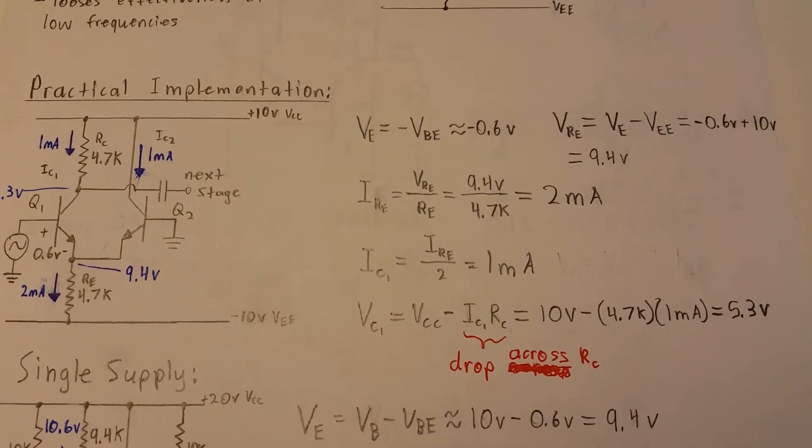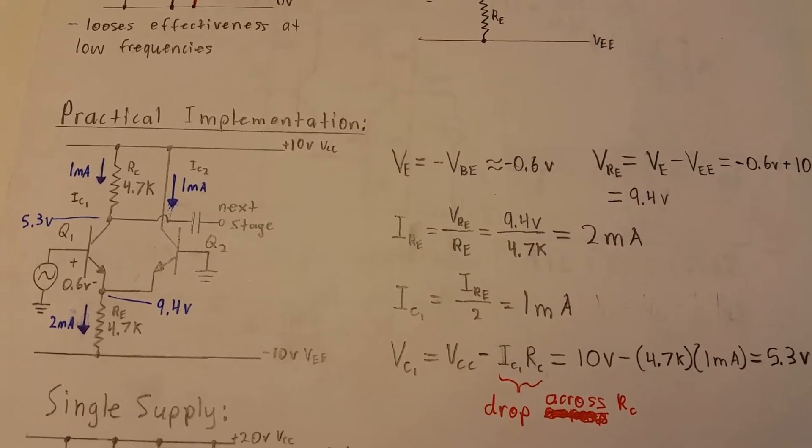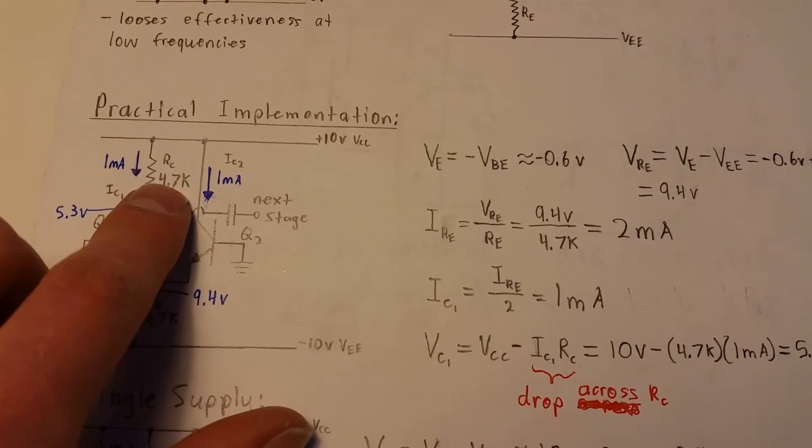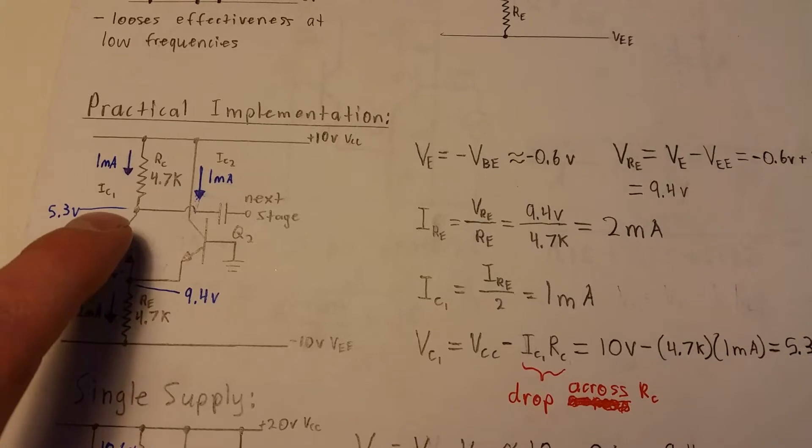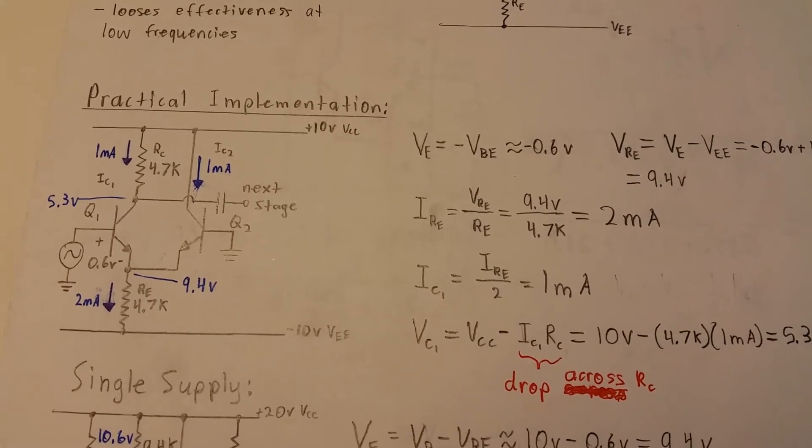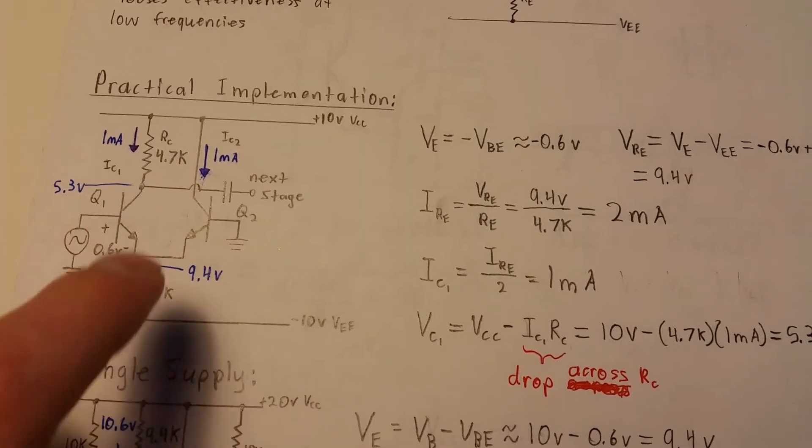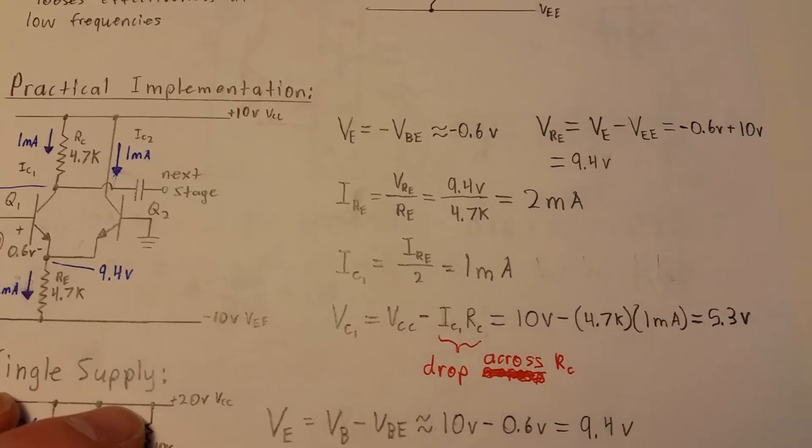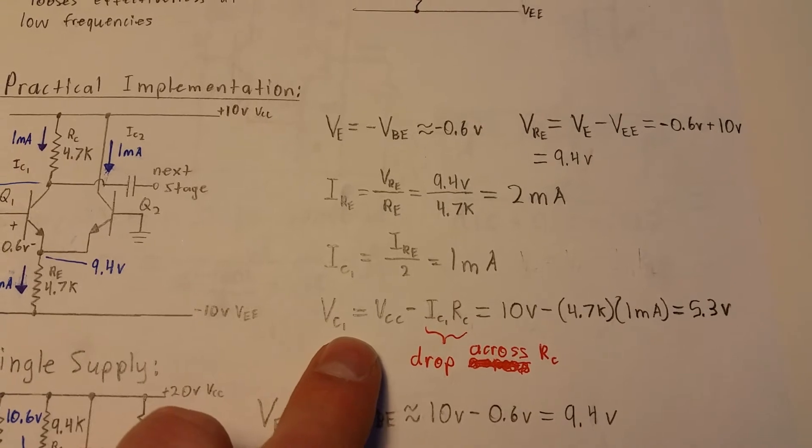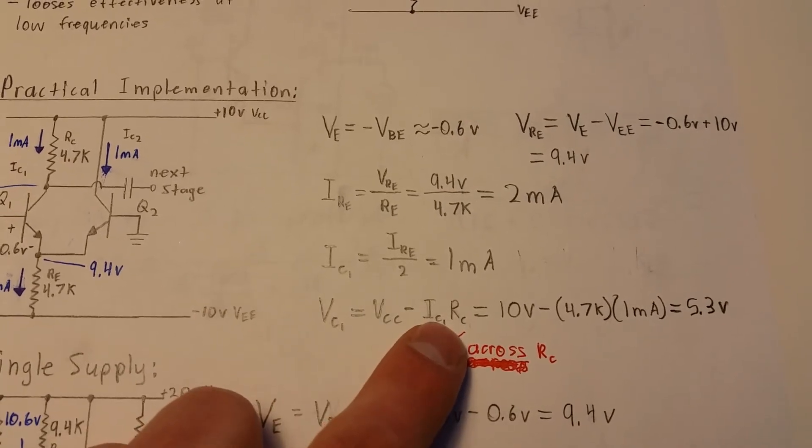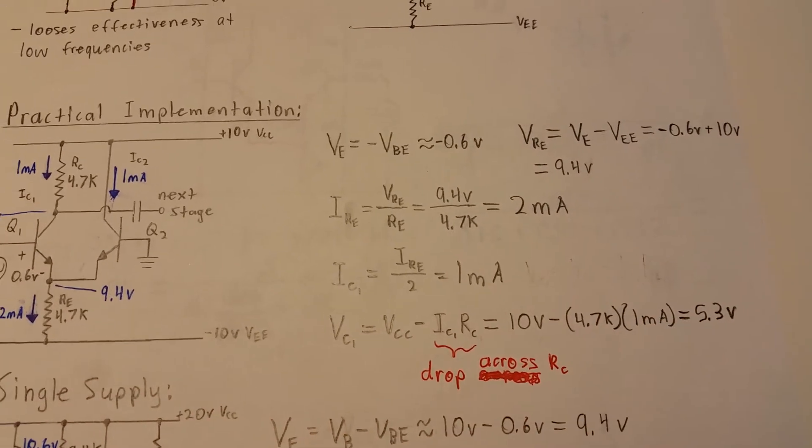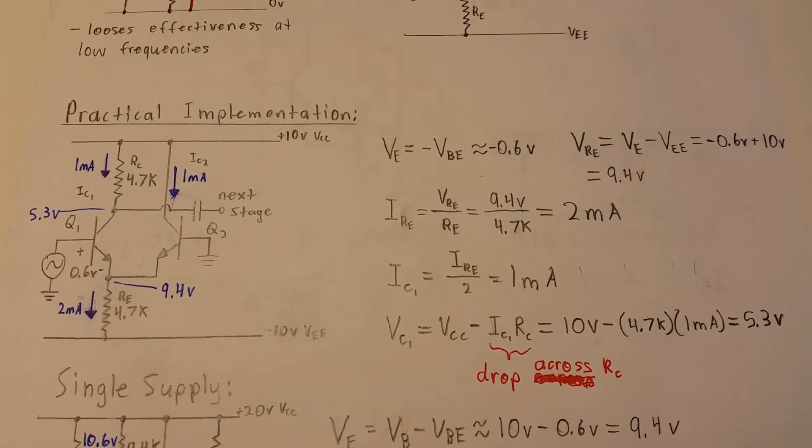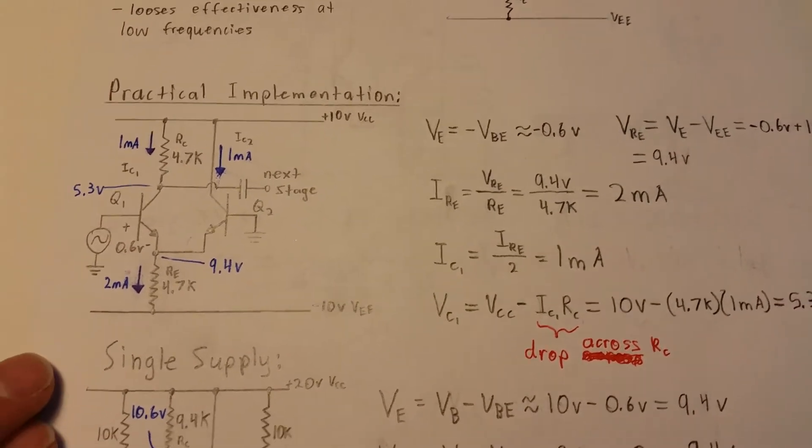Where does that two milliamps come from? Half of it through each, so you get only one milliamp through the collector of our gain stage here. The other milliamp comes from the active bypass transistor. Figure out the collector voltage the traditional way. Once you know the collector current, find out that it's 5.3 volts. That's with split supplies, that's just the concept behind it.